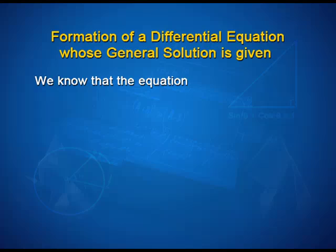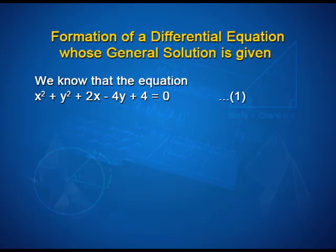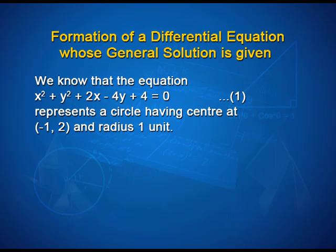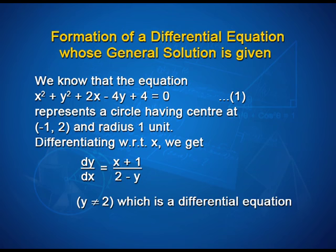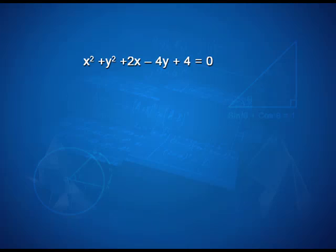We know that the equation x² + y² + 2x − 4y + 4 = 0 represents a circle having center at (−1, 2) and radius 1 unit. Differentiating with respect to x, we get dy/dx = (x + 1)/(2 − y), where y ≠ 2, which is a differential equation. This equation represents the family of circles, and one member of the family is the circle x² + y² + 2x − 4y + 4 = 0.